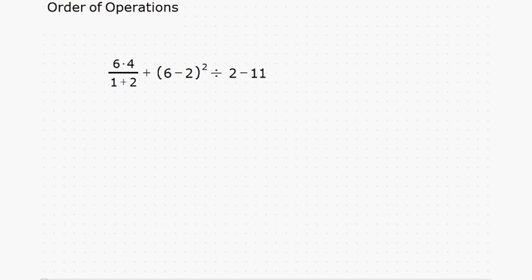Take a look at this example. 6 times 4 over 1 plus 2 plus 6 minus 2 squared divided by 2 minus 11. There's all kinds of stuff going on here, and it turns out that the order in which you do the things is definitely going to affect the outcome.